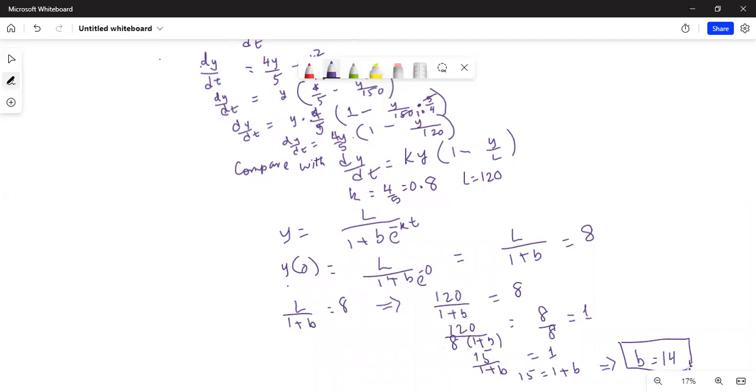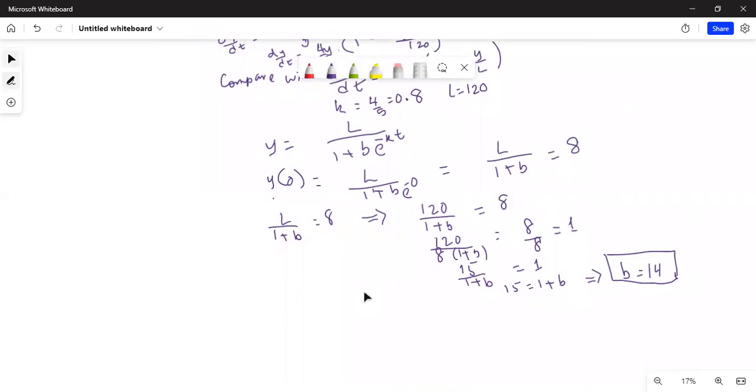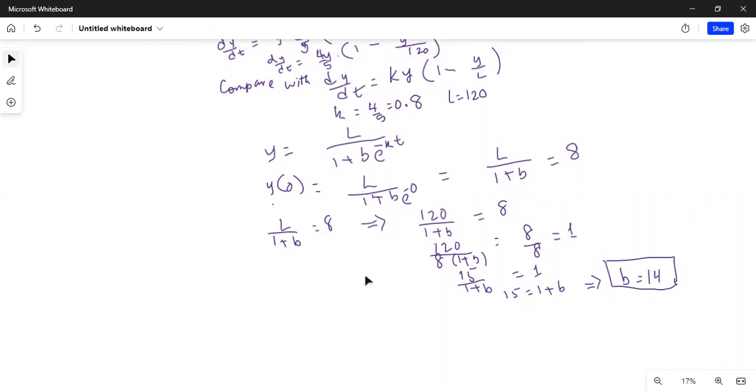So b is equal to 14. Now let's go back to the original solution. Y is equal to L, which is 120 over 1 plus b is 14, e to the power of minus k, k is minus 0.8 times t. That is my solution to the logistic differential equation.